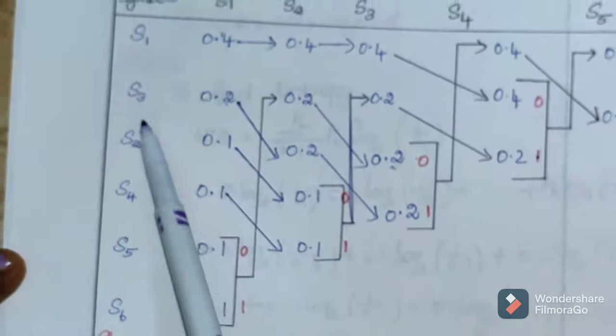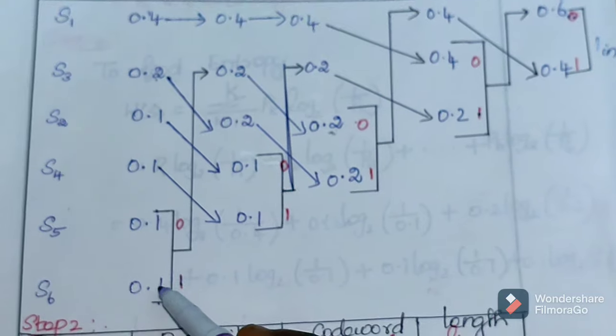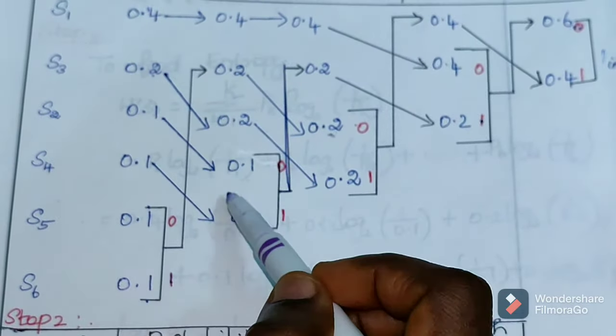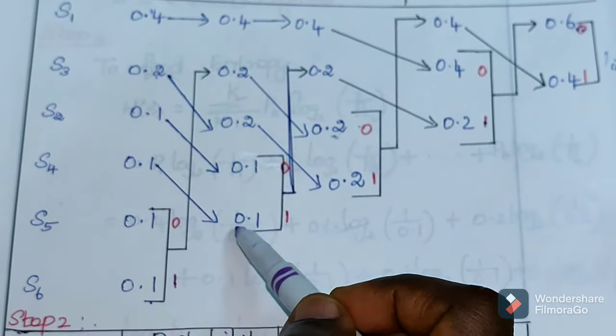First step is arrange the given probabilities in decreasing order. Decreasing order is highest to lowest. So first value, the highest value is 0.4, then 0.2, then 0.1, 0.1, and so on. 0.4 is S1 symbol, 0.2 is S3 symbol. We have stage 1, stage 2, stage 3.